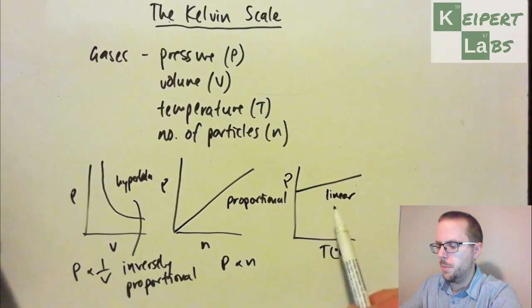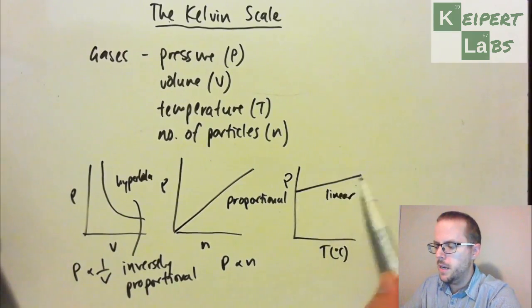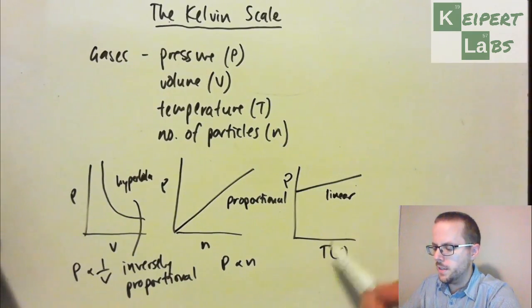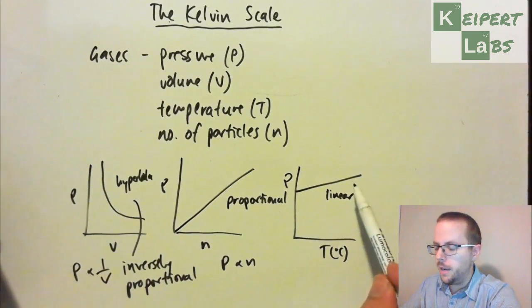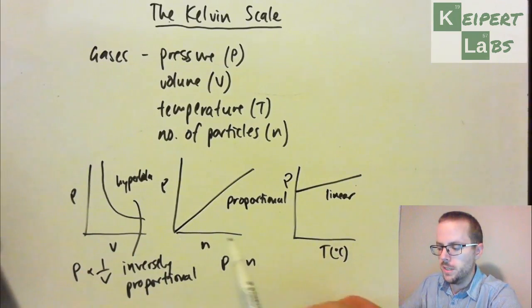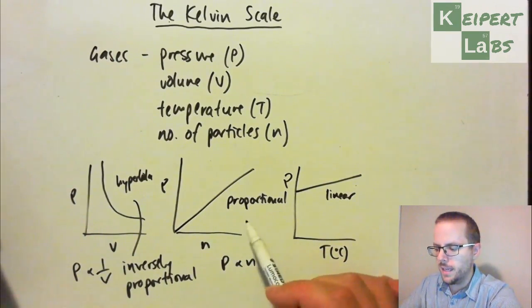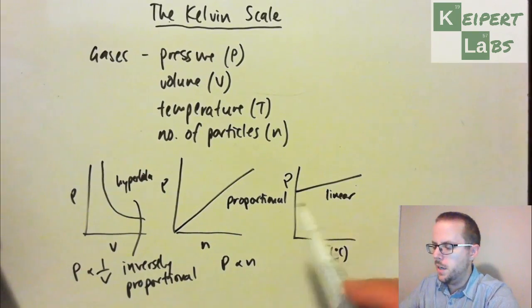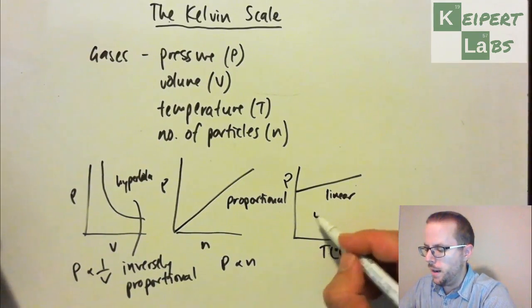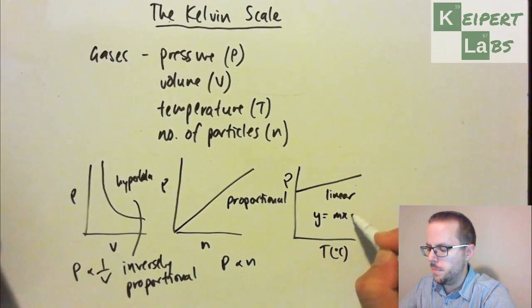When we're saying linear but not proportional, linear is a straight line. But what we're seeing is that if we doubled the temperature in Celsius, we didn't double the pressure. If we doubled the number of particles, we doubled the pressure. So that's why we say it's proportional, that exactly what we do to one, we do to the other. Whereas linear, it's more of our y equals mx plus b kind of line.